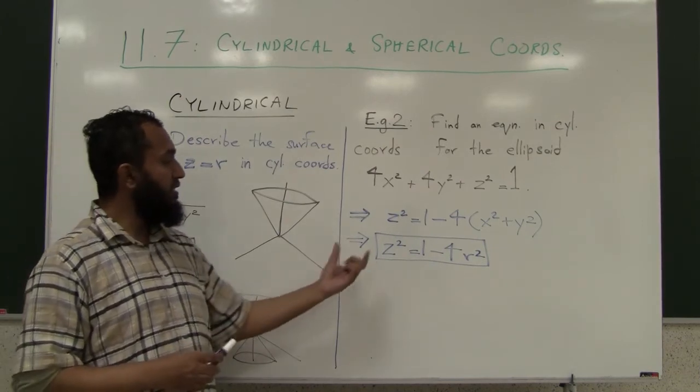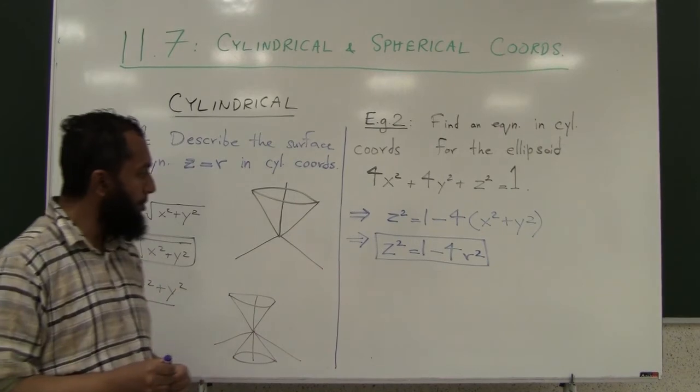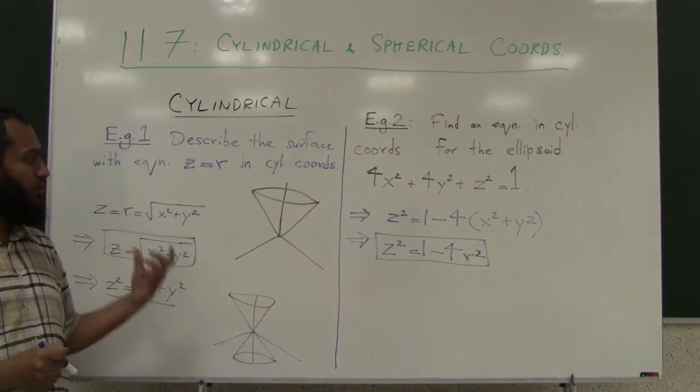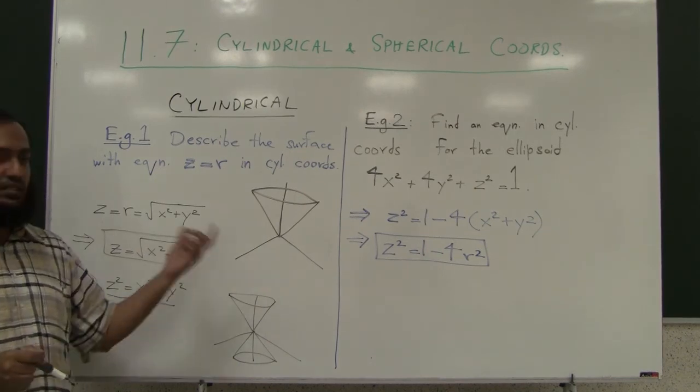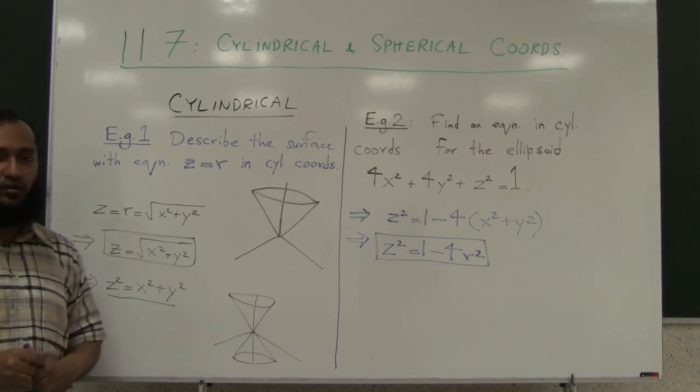Here is the equation in cylindrical coordinates, or you can write it as z squared plus four r squared equals one. This is the equation in cylindrical coordinates of this ellipsoid.